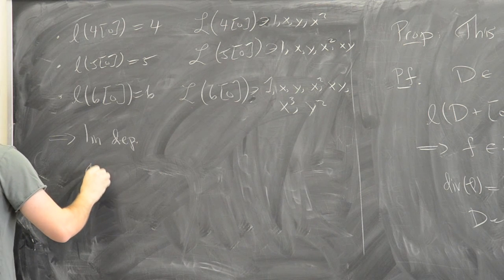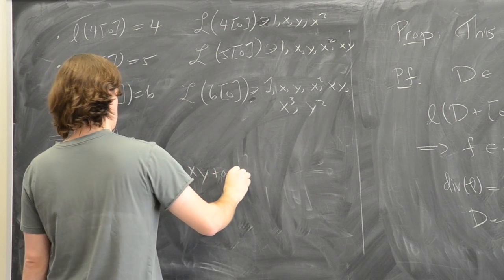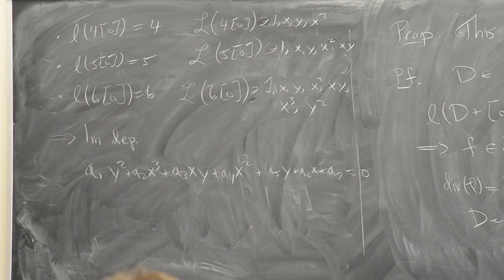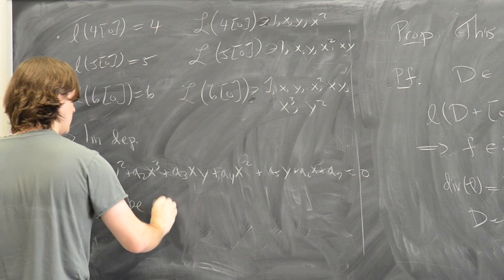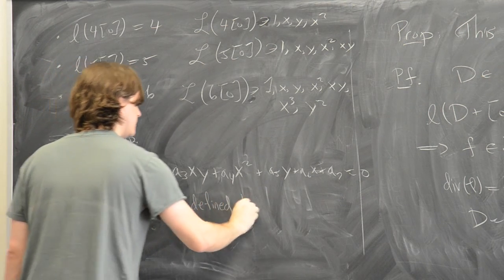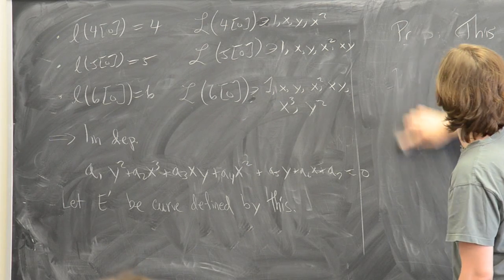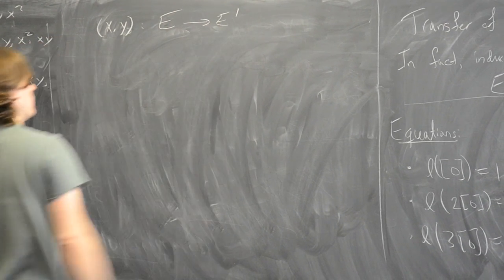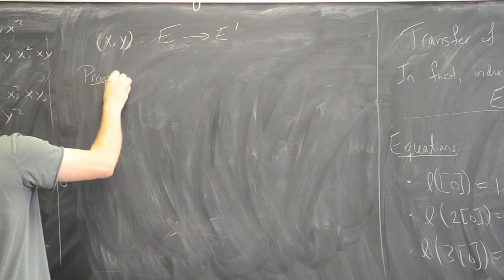Since x and y satisfy this algebraic equation, they define a map from E to E'. A proposition states that this map is actually an isomorphism. So in particular, our curve E — defined just as a genus-one curve with a point — actually has an equation of this form. Now I'll assume the characteristic of the base field is not 2 or 3. With this assumption, changes of variables can simplify the equation — for instance, you can eliminate the coefficient of y² and the xy term — and reduce it down to the form y² = x³ + ax + b.